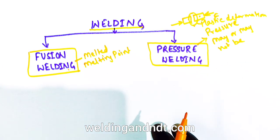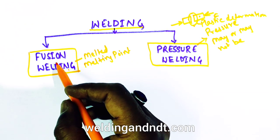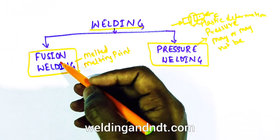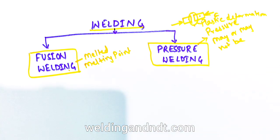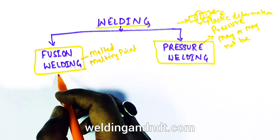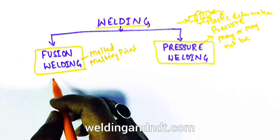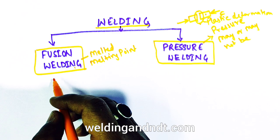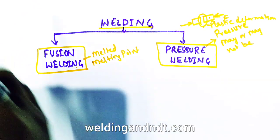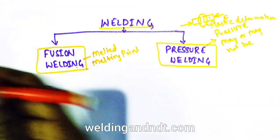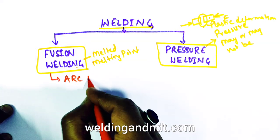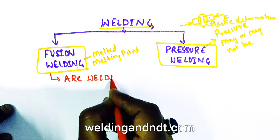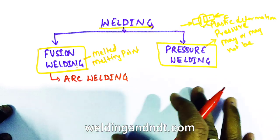There are many processes in both fusion welding and pressure welding. The first and foremost, very important fusion welding process is arc welding, which is very popular and very common in industries.